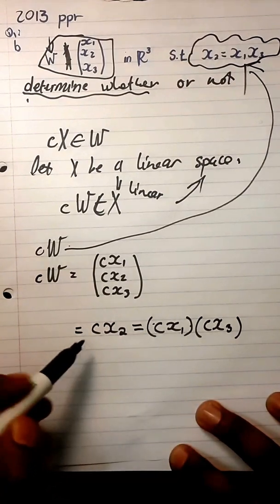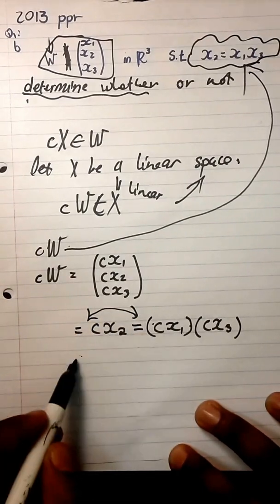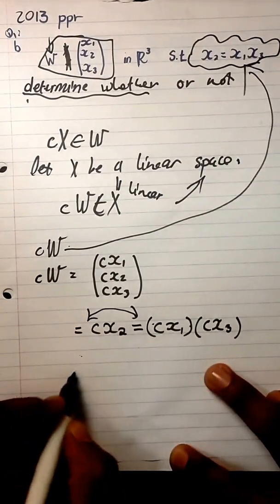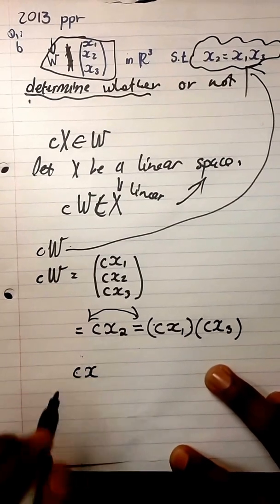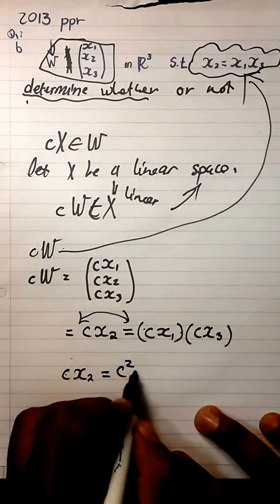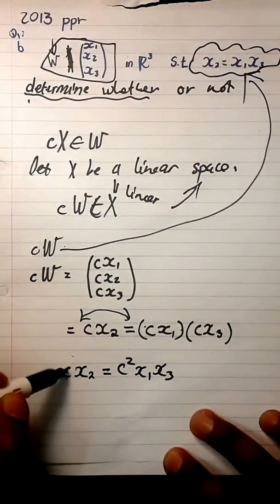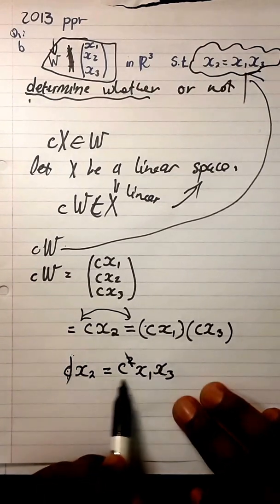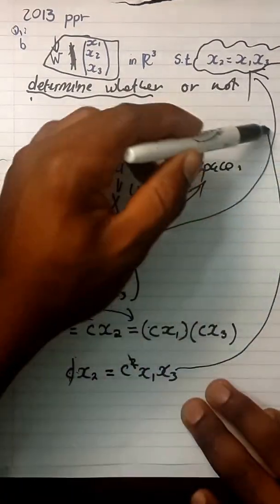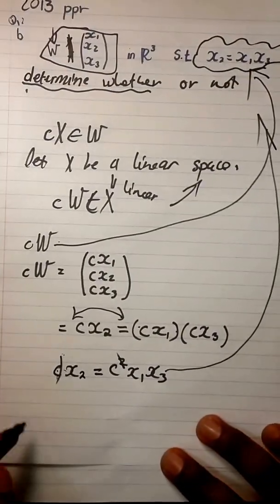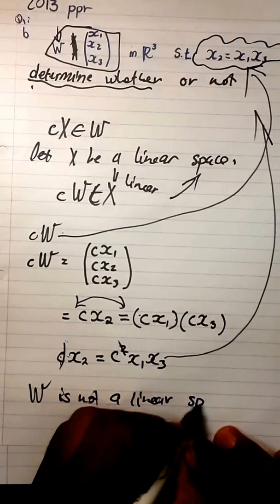Note that c·x2 = c²·x1·x3. We can cancel one of the c's, giving us c·x2 = c·x1·x3, which does not agree with the original rule x2 = x1·x3 because of the extra factor of c. Therefore we conclude that W is not a linear space.